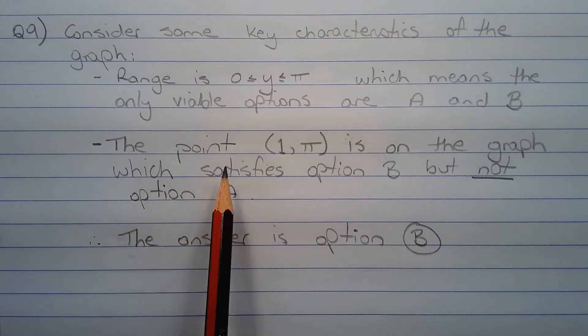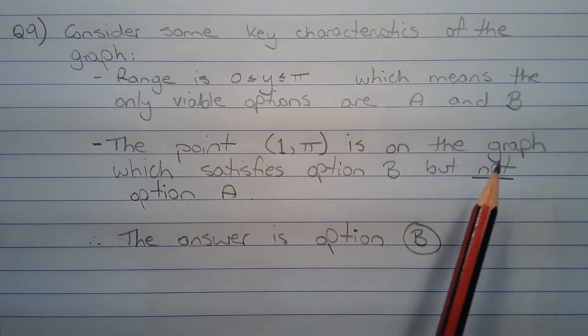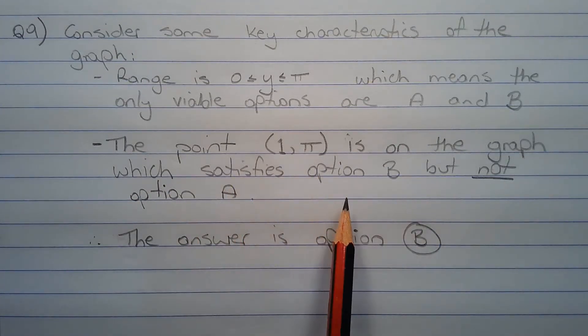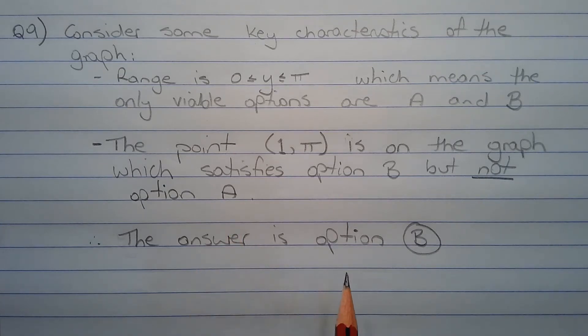Now a specific point is on the graph which satisfies option b but not option a. Therefore, by the process of deductive reasoning, the answer is option b.